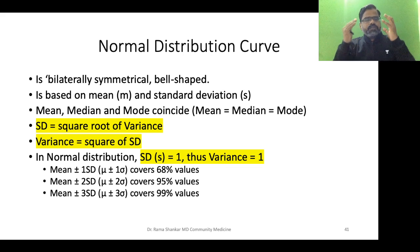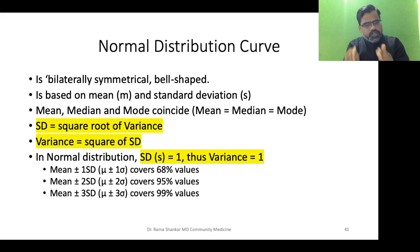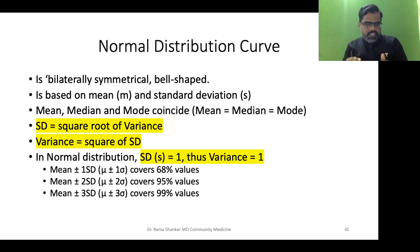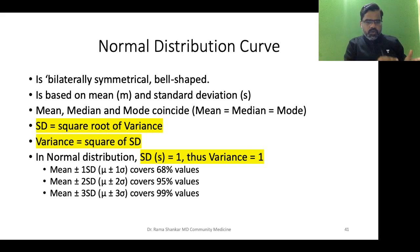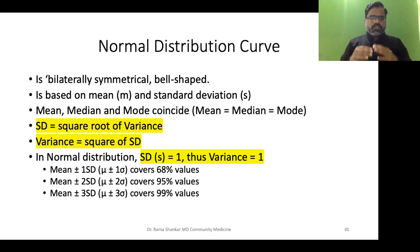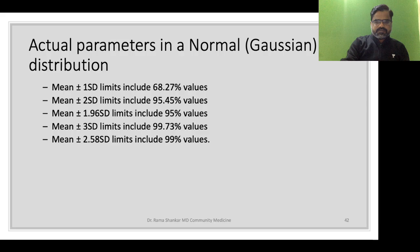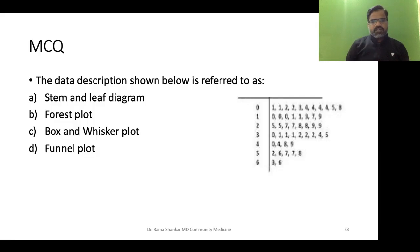Mean ± 2 SD covers 95%, which is the confidence limit — lower limit and upper limit. For example, average height of 100 students is 5.8, but that's not indicative of all students. We take a range: mean ± 1 SD means 68 students out of 100 will fall in that range. Mean ± 3 SD covers 99.7% of values. This is how we represent data — showing how much on the lower and higher ends.